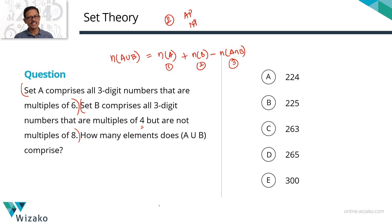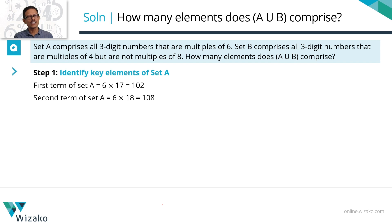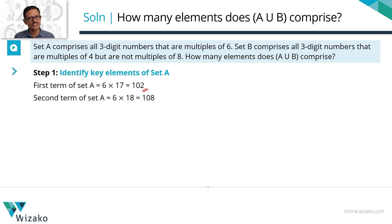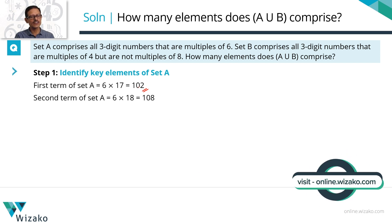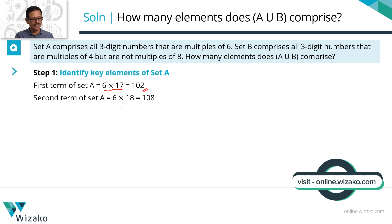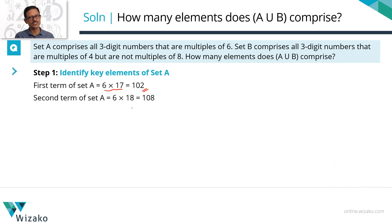Let's start by identifying the key elements in Set A. All elements in Set A are multiples of 6. The first element is 102 — it's the first three-digit number divisible by 6, since 100 and 101 are not. Notice I'm writing it as what-th multiple of 6; that's going to be very useful. The second term is 108, the next multiple of 6, which is the 18th multiple of 6.